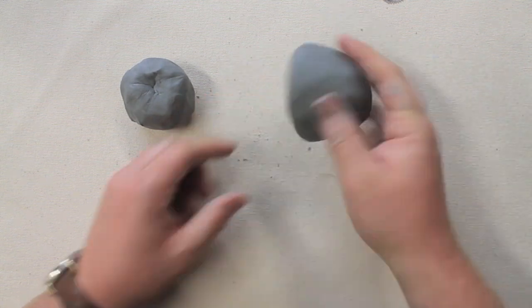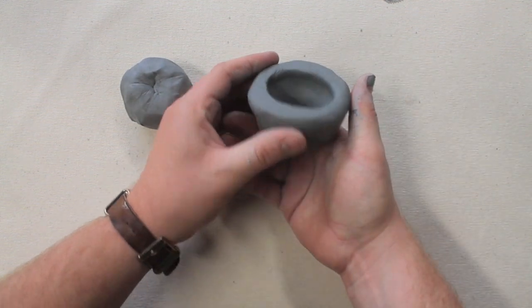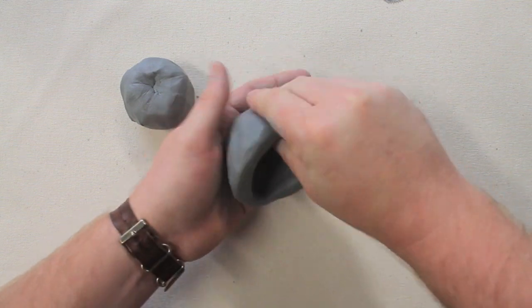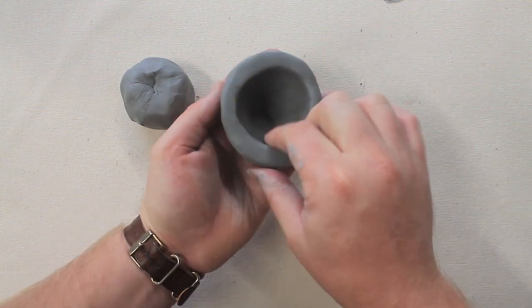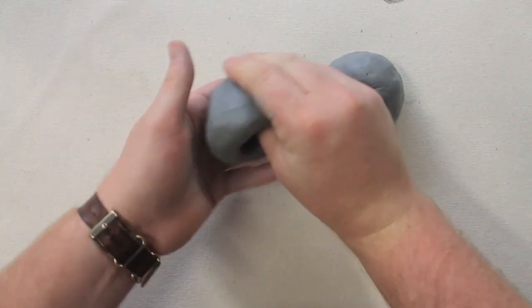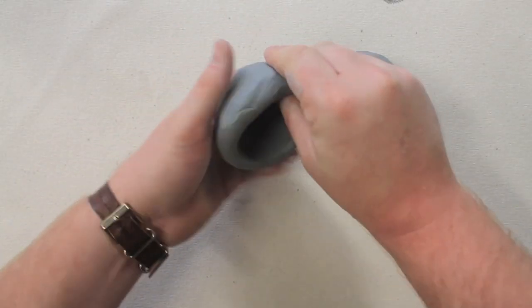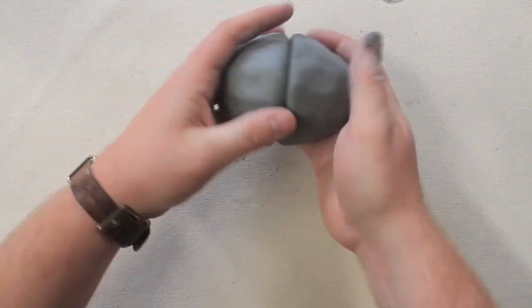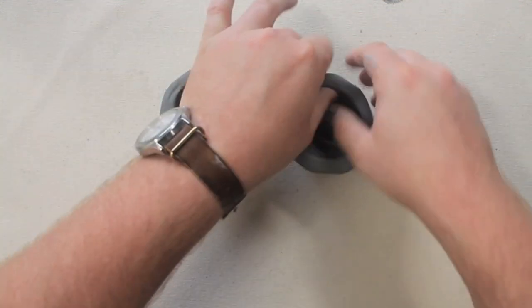I'm checking for the evenness of the top, tapping it on the table so it's perfectly flat. Next, I'm going to repeat the process. I'm going to make an identical pinch pot that will match the other one and come together as a perfect sphere.